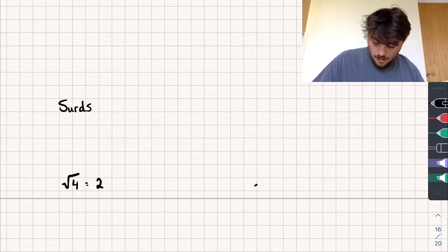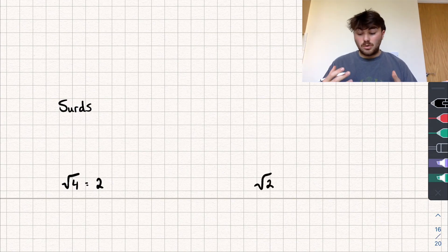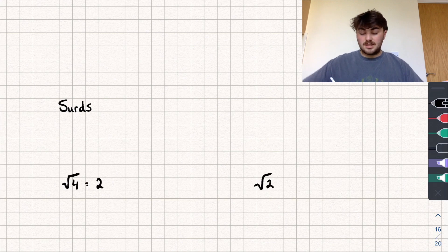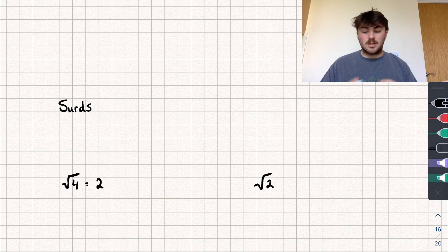On the other hand, say we had the square root of 2. What whole numbers can you think of that I can multiply by themselves to get to 2? None exist — you can't. And so for that reason, the square root of 2 is what we would call a surd.